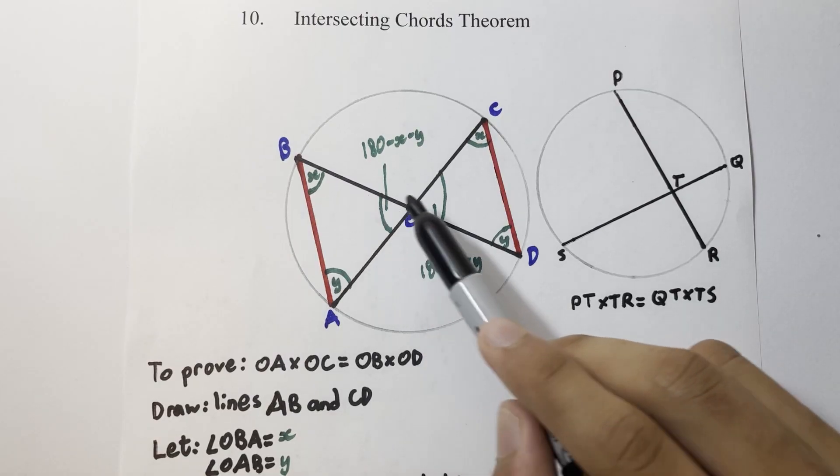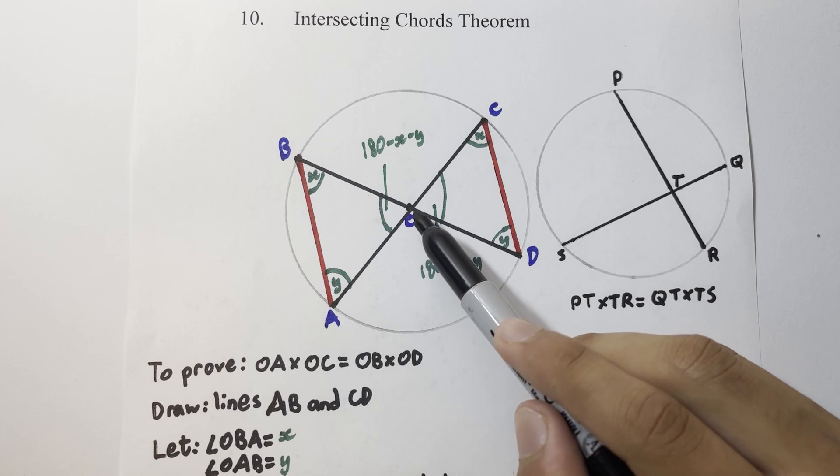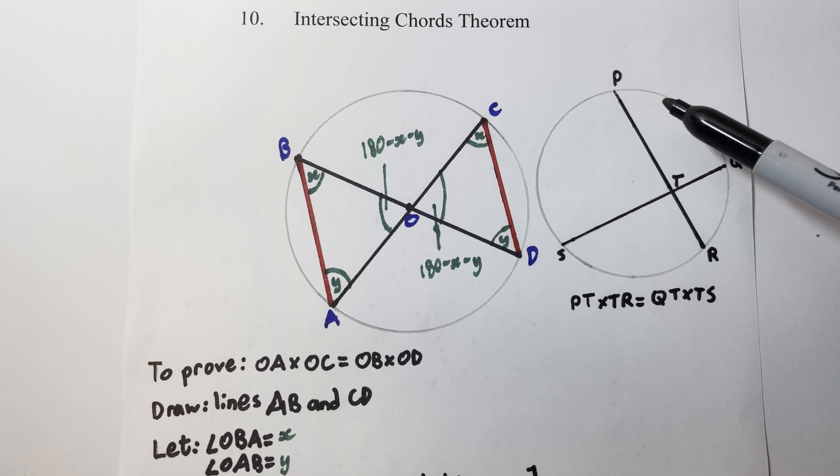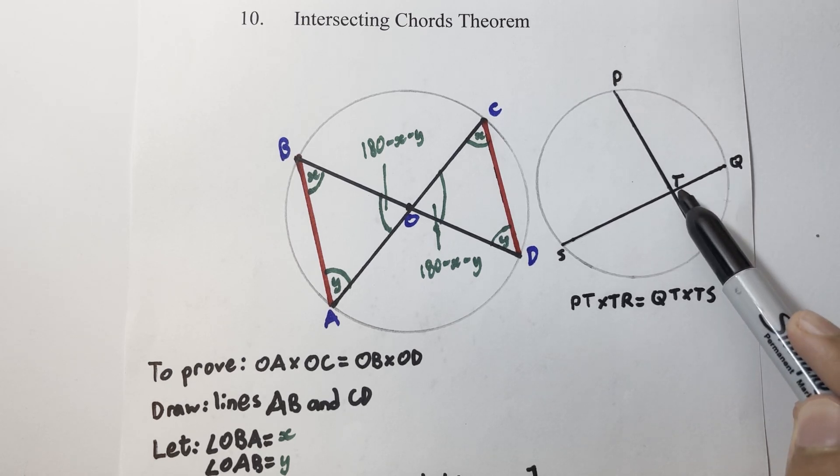In our case, the two chords which we had passed through the center point, so were really diameters, but this intersecting chords theorem can work with any two chords. For example here, PT times TR would also be the same as QT times TS.